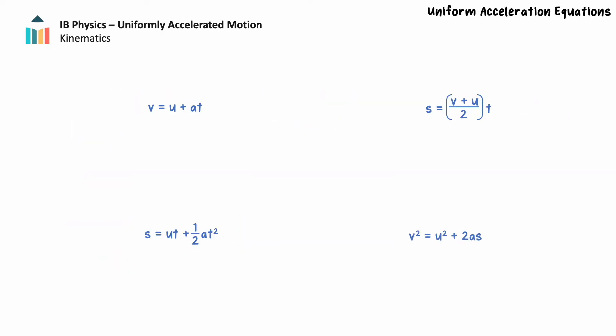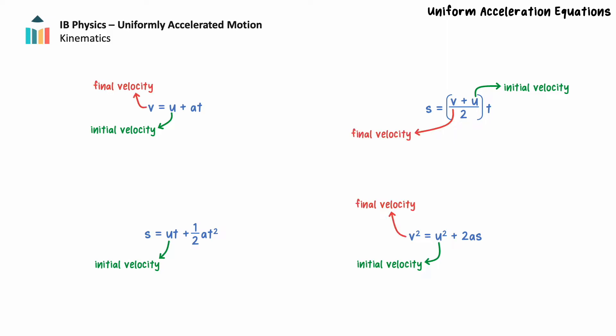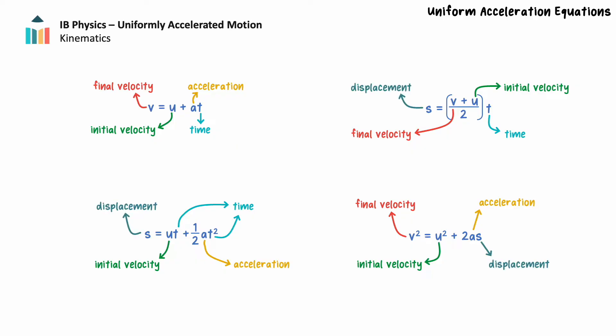There are four formulas for uniformly accelerated motion provided in your data booklet. Each equation contains the initial velocity, represented by u. Three of the four equations contain the final velocity v, the acceleration a, the time t, and the displacement s. Notice that each equation is missing a single variable between final velocity, acceleration, time, or displacement. This will help us to correctly select a formula to use when solving problems.